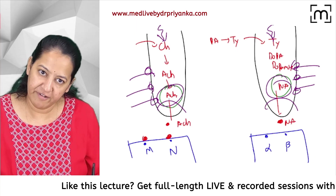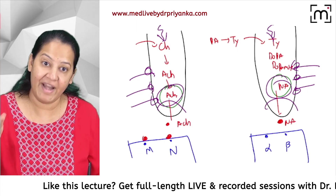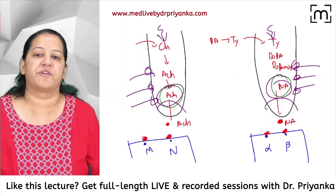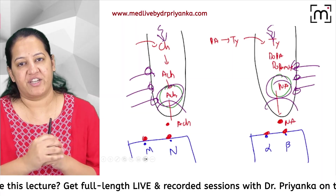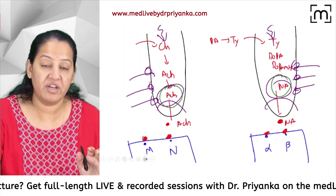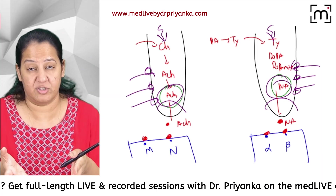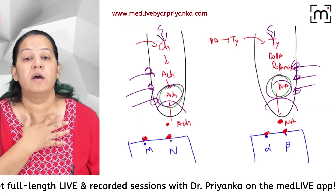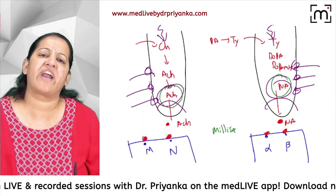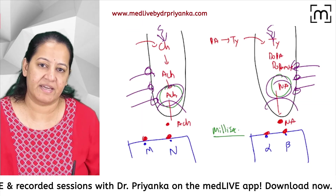Acetylcholine binds with muscarinic and nicotinic receptors and shows its action. Noradrenaline binds with alpha and beta receptors and shows its action. The action of both neurotransmitters lasts only for a millisecond — a fraction of a second.